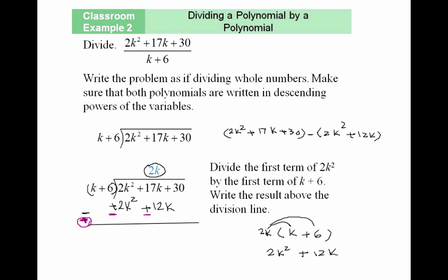We're subtracting 2k² + 12k from the top row. If I write it in a row, you can clearly see what we're doing. In order to subtract, I have to distribute this negative, which changes each of these terms to its opposite sign.